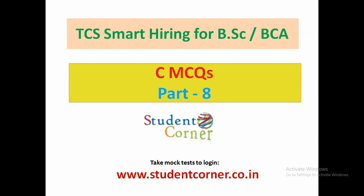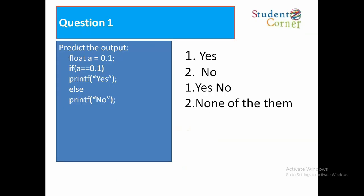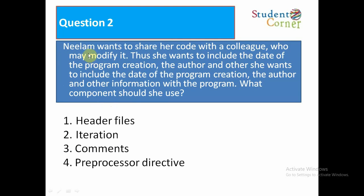In this section we'll discuss 10 MCQs on Part 8. Question number 1: Predict the output. Float a is equal to 0.1. If a is equal to 0.1, printf yes, else printf no. Option 1: Yes. Option 2: No. Option 3: Yes or No. Option 4: None of them. The answer is No because a is defined as float and 0.1 is defined as double by default. Float is not comparing with double, so obviously it goes to else part and we print No.